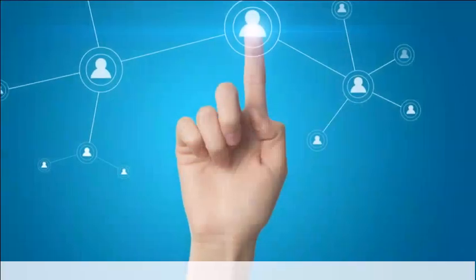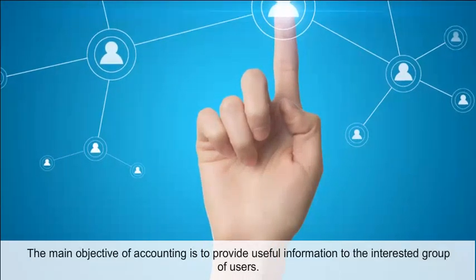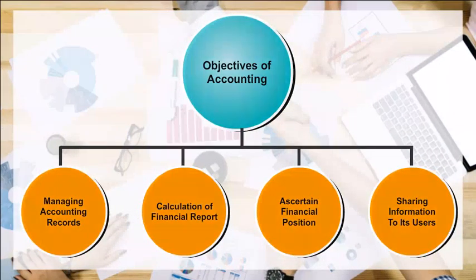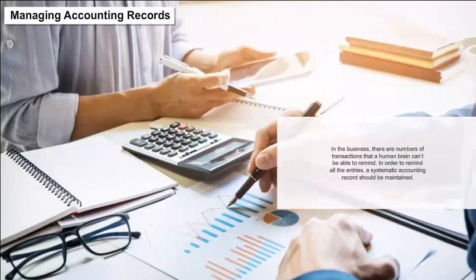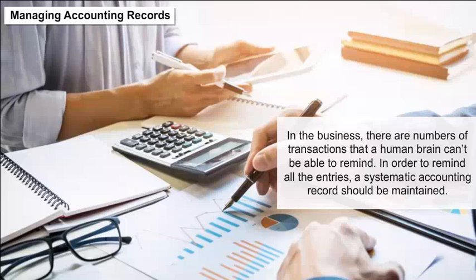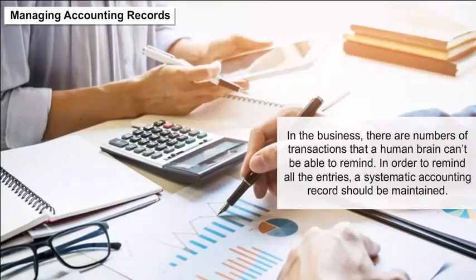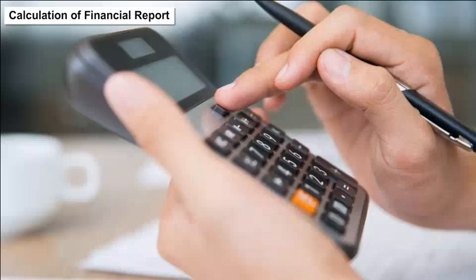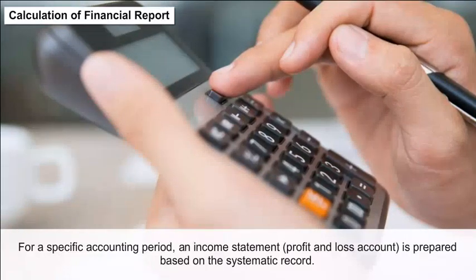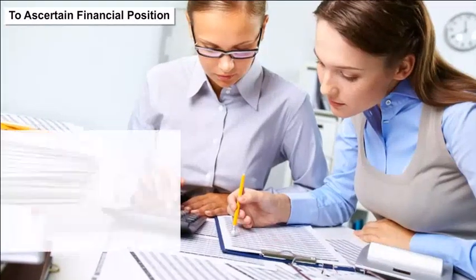Objectives of accounting: The main objective of accounting is to provide useful information to the interested group of users. Accounting objectives are classified into different sections. Managing accounting records: In the business, there are numbers of transactions that a human brain can't remember, so a systematic accounting record should be maintained. Calculation of financial report: For a specific accounting period, an income statement and profit and loss account is prepared based on the systematic record. To ascertain financial position.